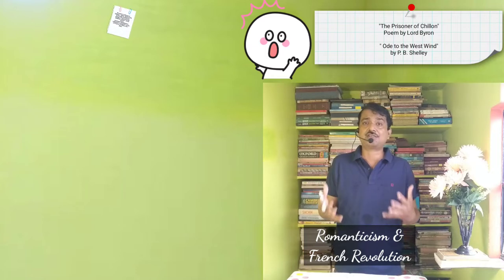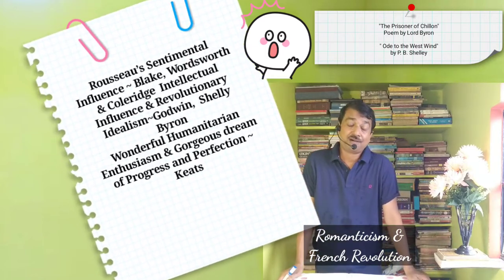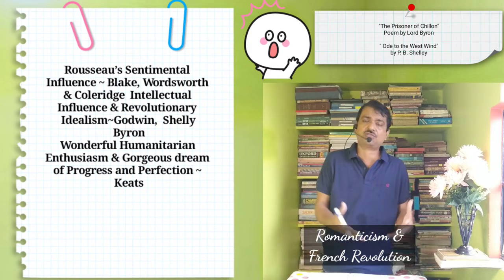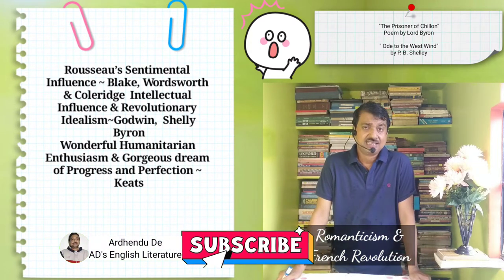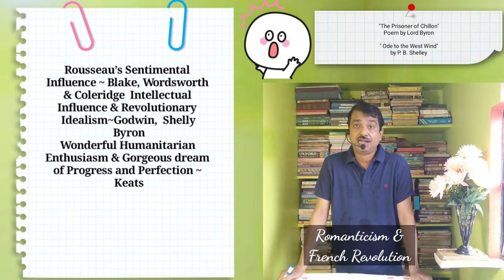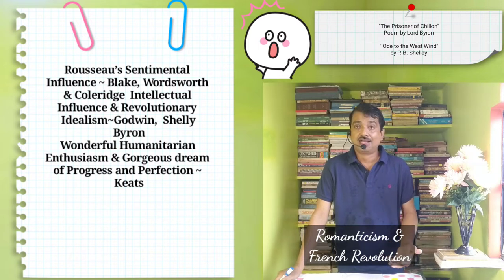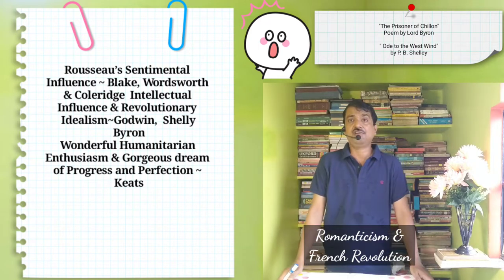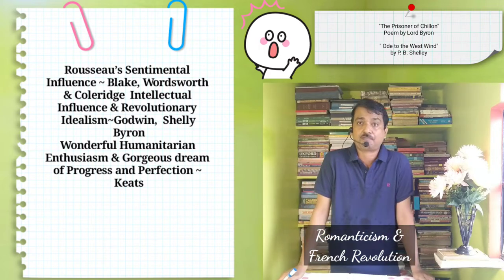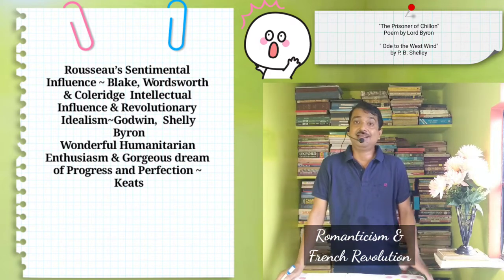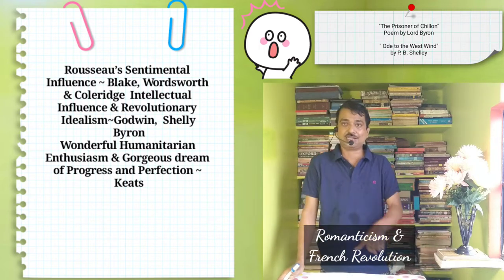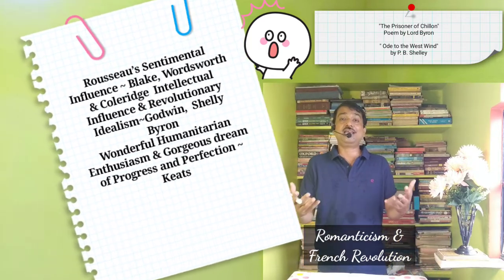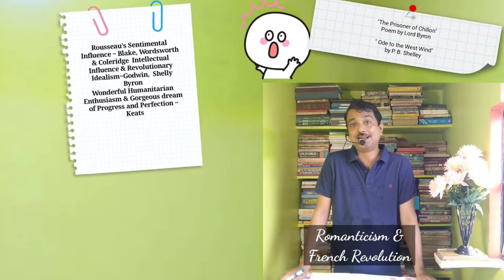Rousseau established the cult of the individual and championed the freedom of the human spirit. His sentimental influence touches Blake, Wordsworth, Coleridge, and many Romantic poets, while his intellectual influence invited Godwin and, through Godwin, Shelley and Byron. Byron and Shelley also championed liberty and revolutionary idealism in many of their poems. A wonderful humanitarian enthusiasm and a gorgeous dream of progress and perfection are kindled in ardent young souls — these are the Romantic souls. This is the central creed of Romantic poetry: the prophecy of a new day, forwarding into an era of realized democratic ideals.